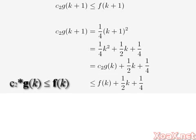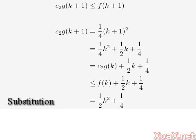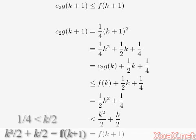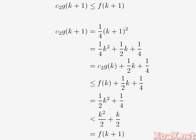Using our inequality for the kth case, we get this, which equals this by substitution and simplification. The next inequality follows from the fact that 1/4 is less than k/2 for all k greater than or equal to 2. Of course, k²/2 + k/2 is just the value of f(k+1), so we are done.